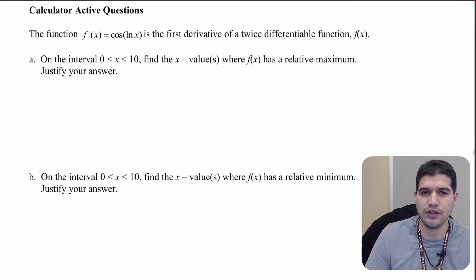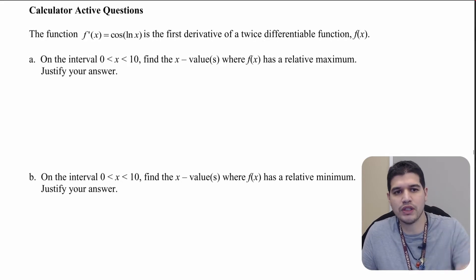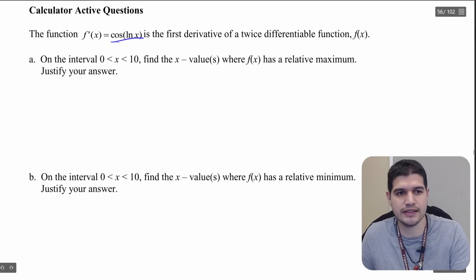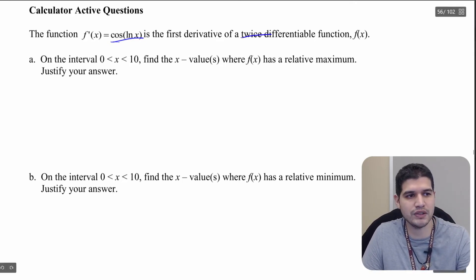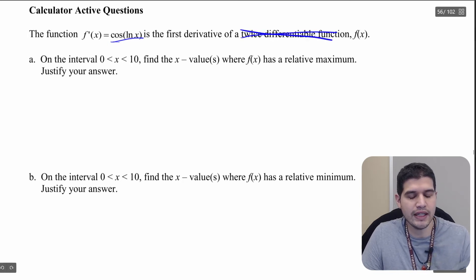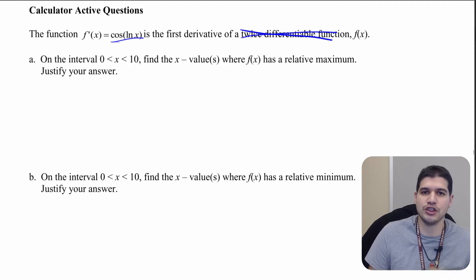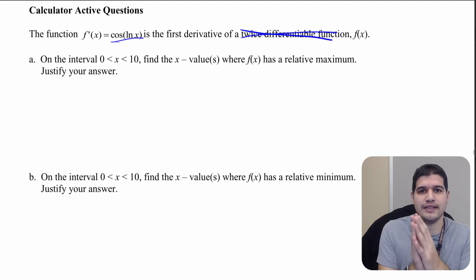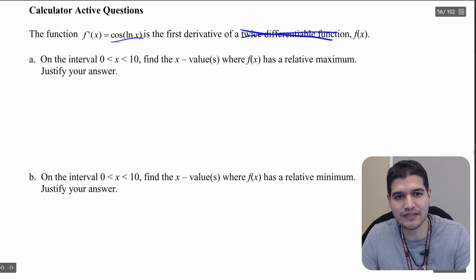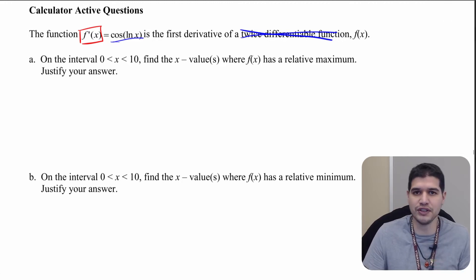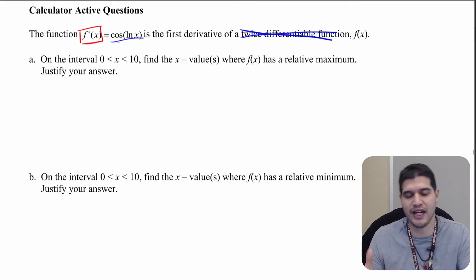Make sure you grab your calculator for this question. We're going to be given a function cosine of the natural log of x, and that's going to be the first derivative of a twice differentiable function. The twice differentiable function means that you can take the derivative at all points over the domain of the function. We have f prime of x, so we're given the first derivative and we're going to have to make connections between the function and its second derivative.